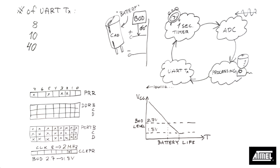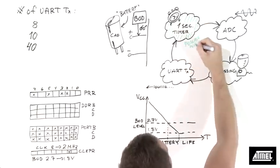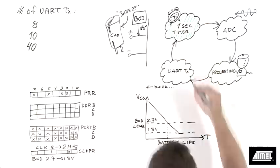An obvious next step is to put the AVR device in power save mode in between UART transmission and the next ADC conversion.